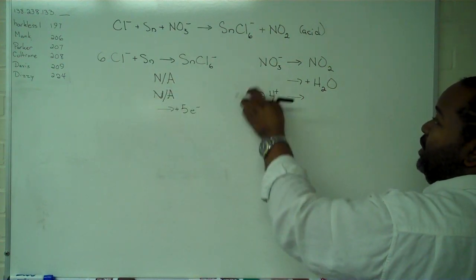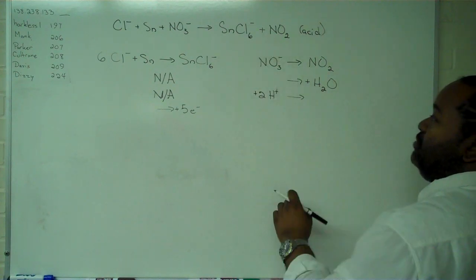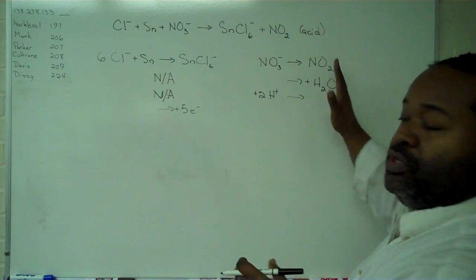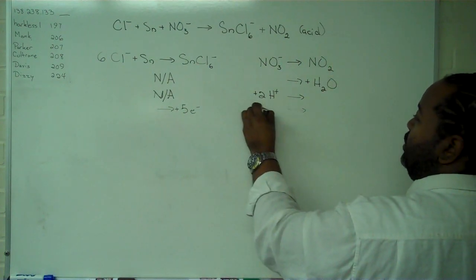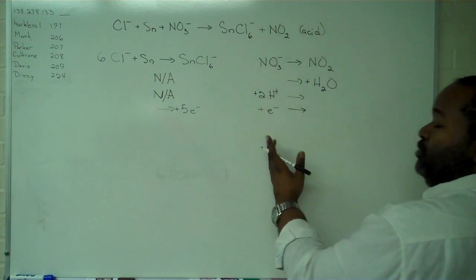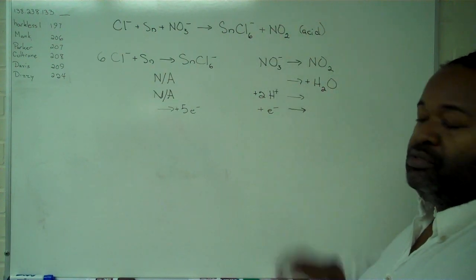Our second half reaction has a positive two and a negative one, so that's a positive one overall, versus neutral for the products. So we can add in one electron, and now we have neutral on the reactant side and neutral on the product side.